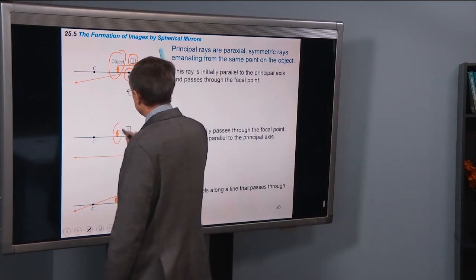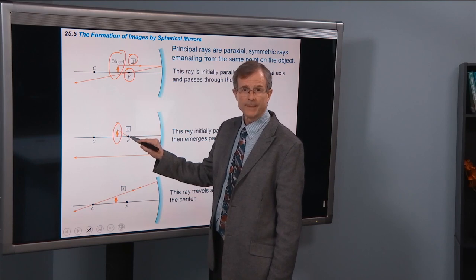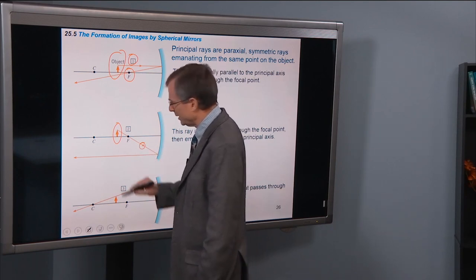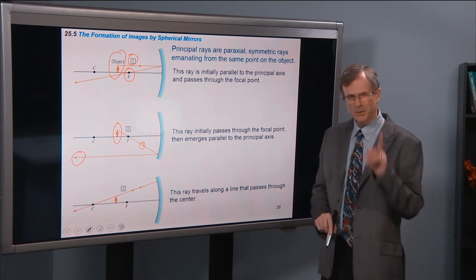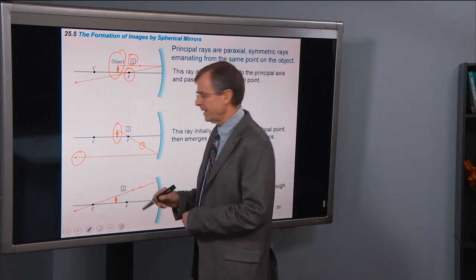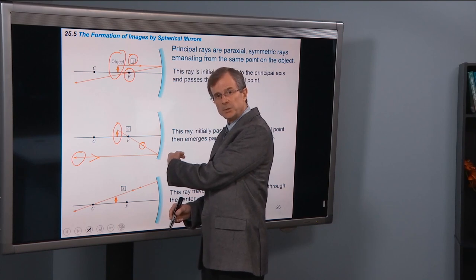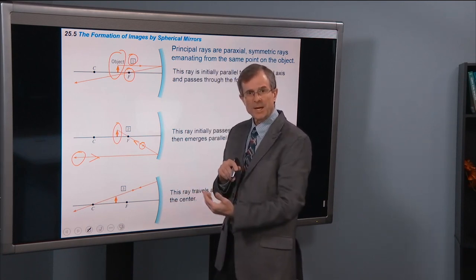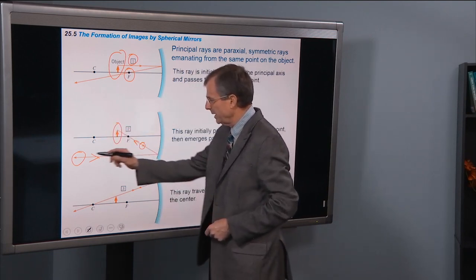The second principal ray goes straight from the tip of the object through the focal point. It proceeds through, hits the mirror, and then comes off as a paraxial ray — parallel to the principal axis. By the principle of reversibility: if you reverse this light ray and have it come in from infinity parallel to the principal axis and hit the mirror, it will reflect and go through the focal point. Reversing time gives us the ray that leaves the tip, passes through the focal point, and hits the mirror.